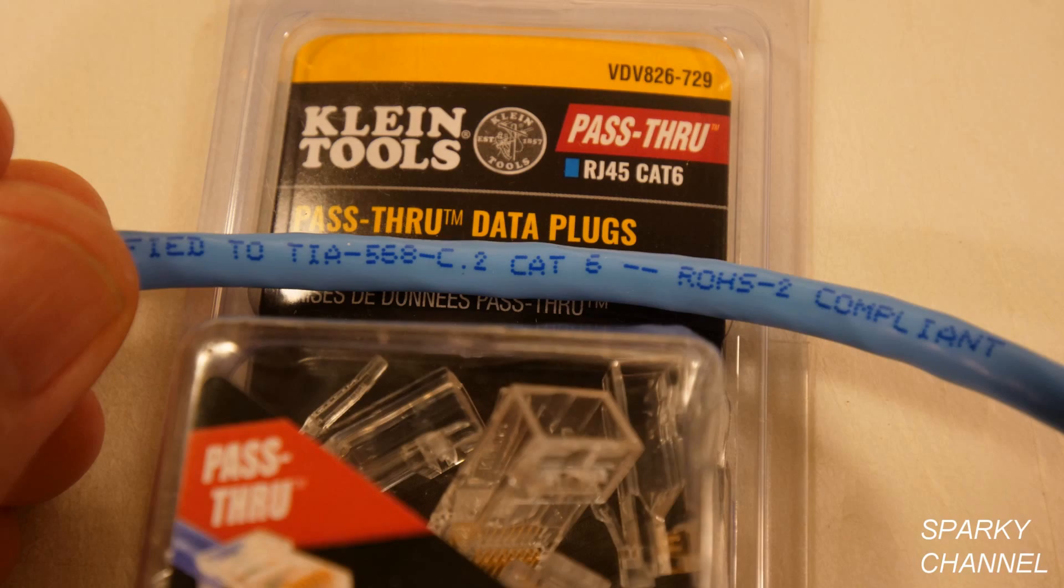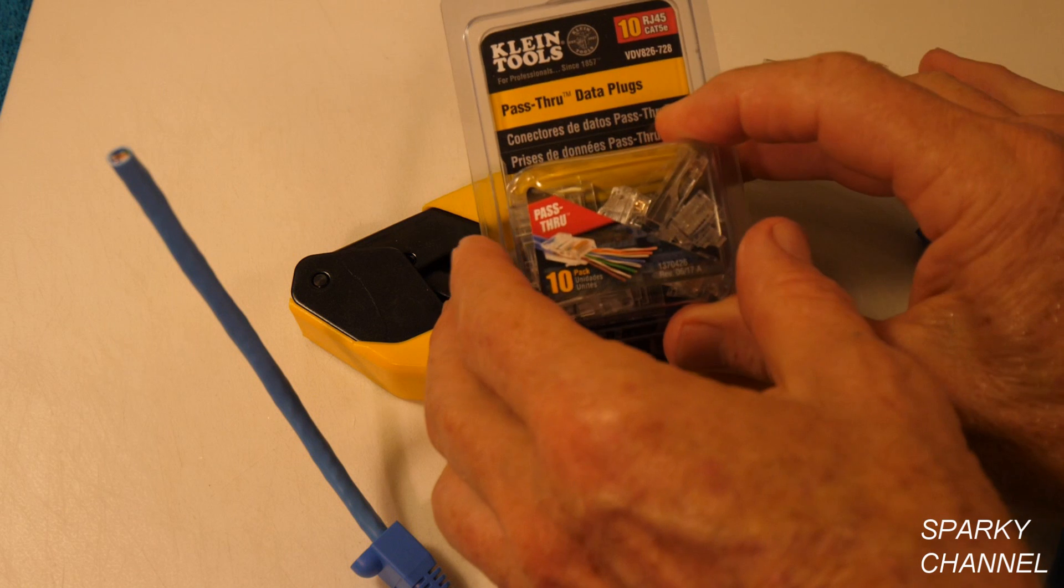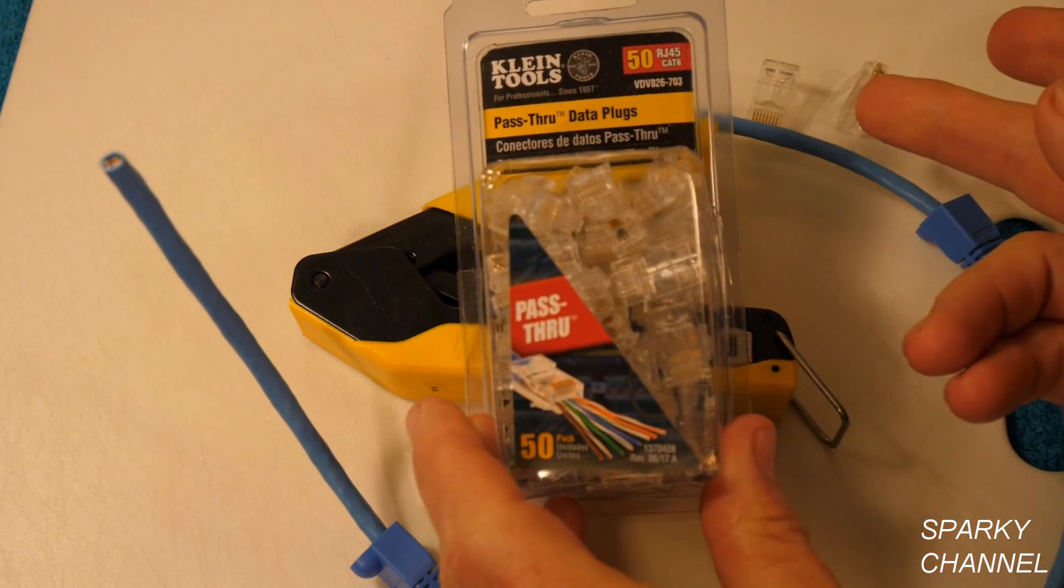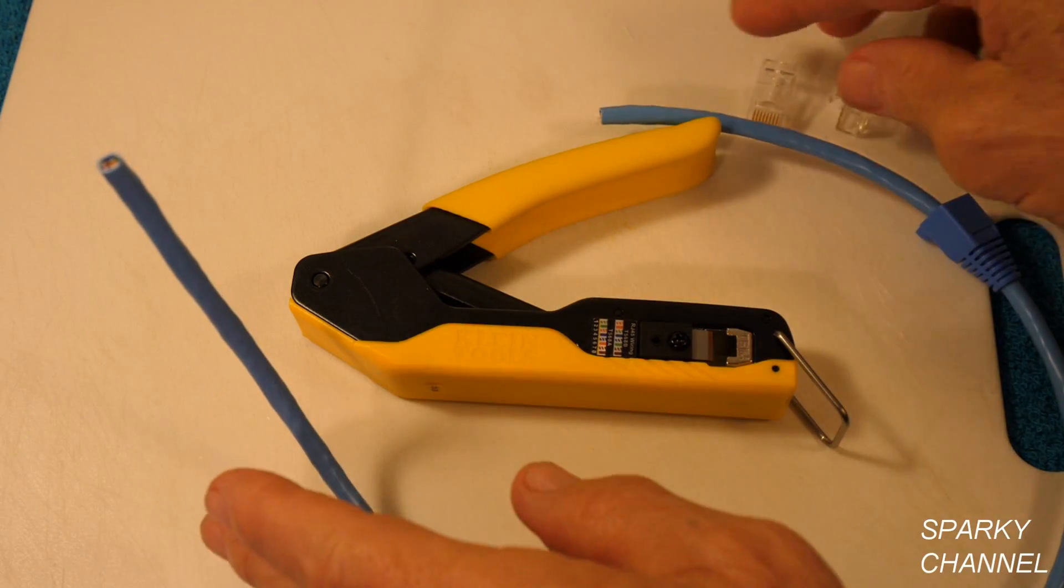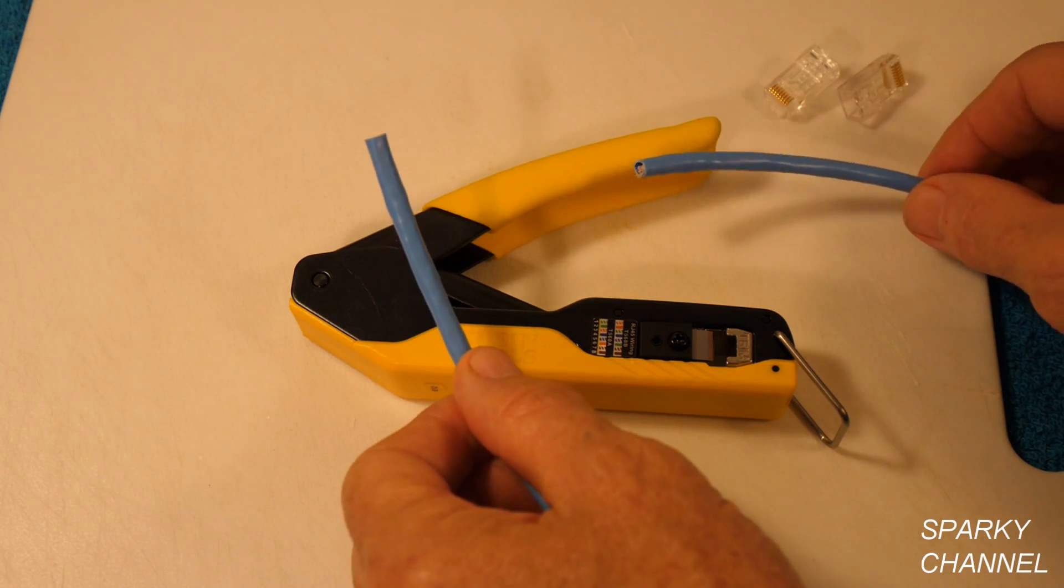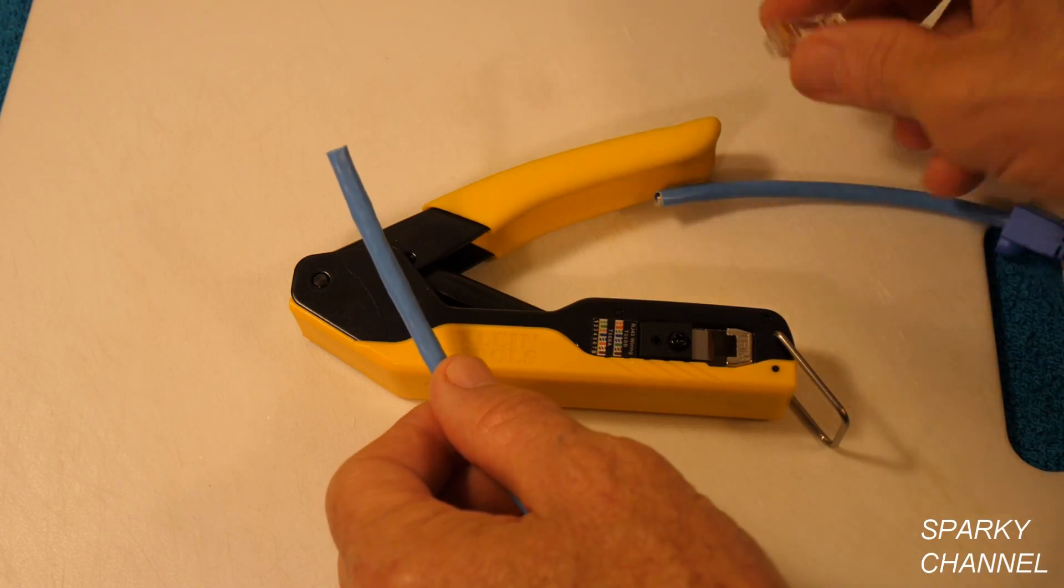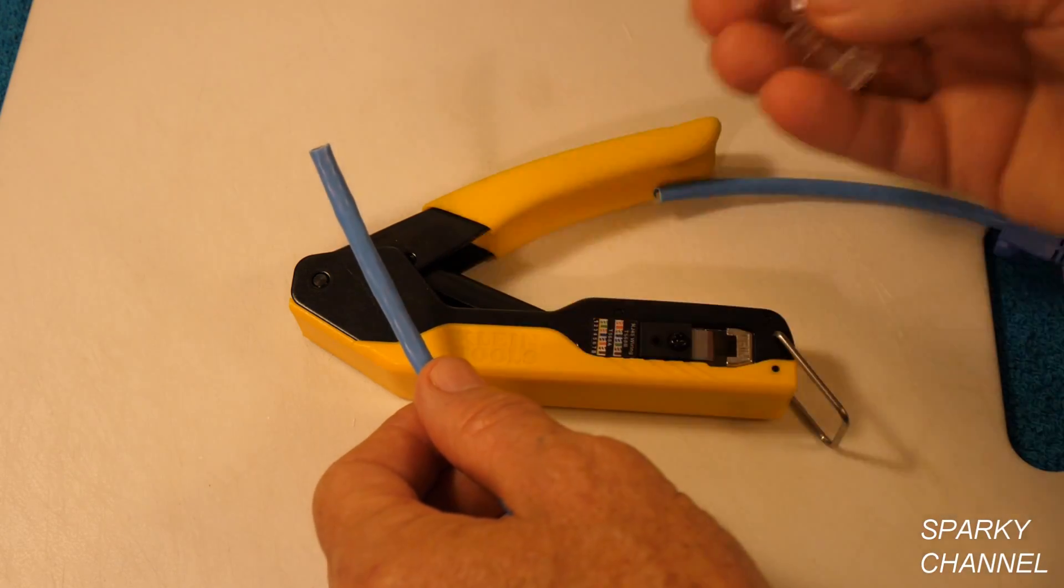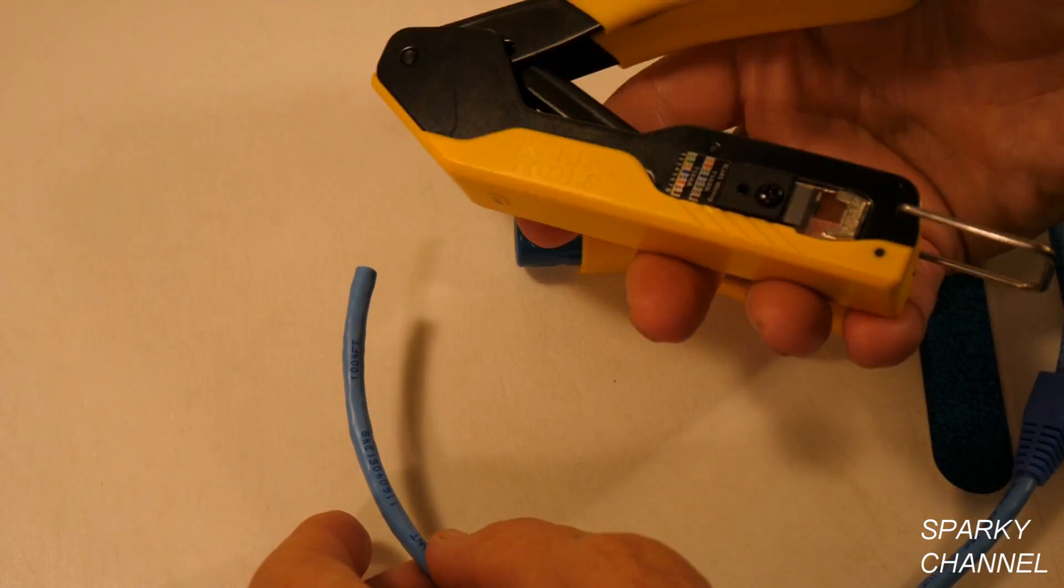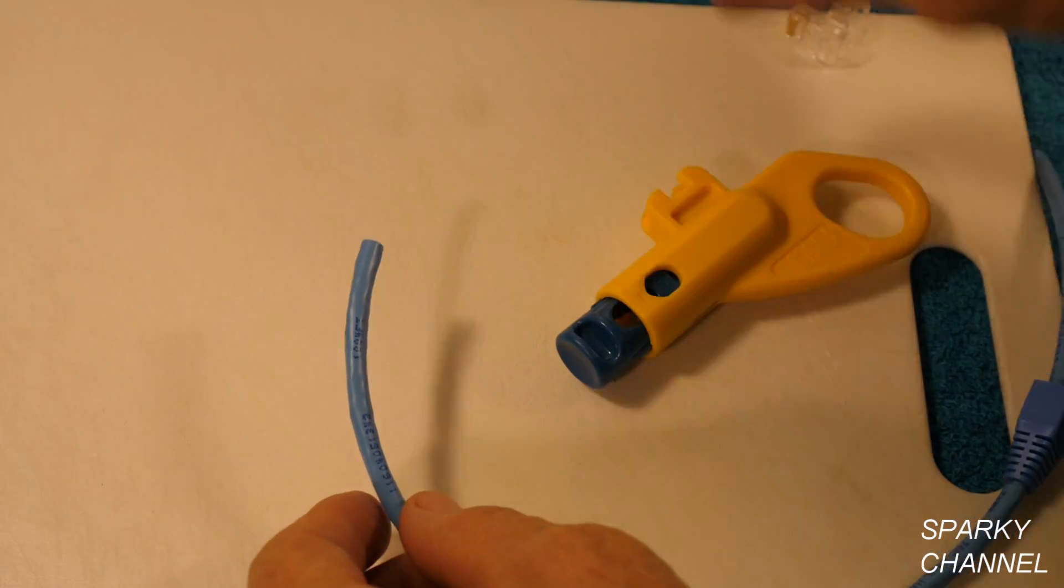Now, this is category six cable. You can always read right on it. It says category six. And if you have category six cable, use category six plugs. Like these are category five E plugs. And these are category six plugs. So use category six with category six. Because if you use the five E plugs on the category six cable, you'll get the performance of five E. So this way we can get the full performance of this category six cable. So let's make a modular patch with the new compact modular crimper.